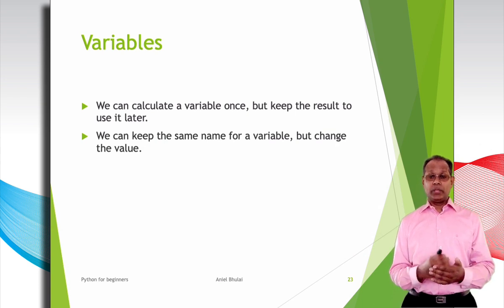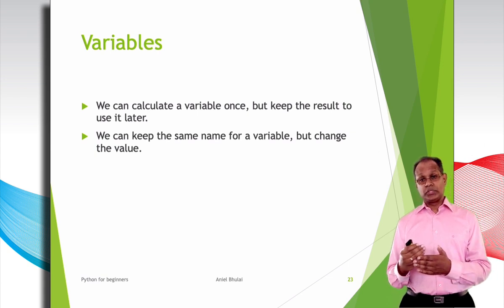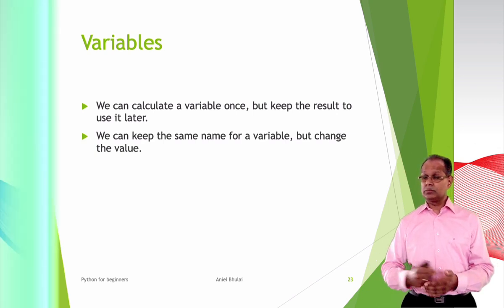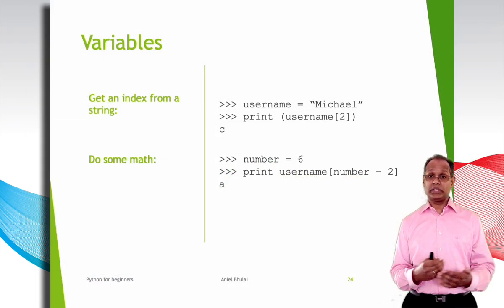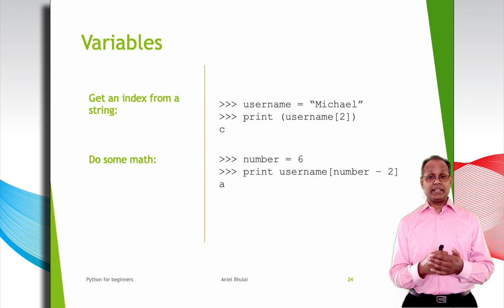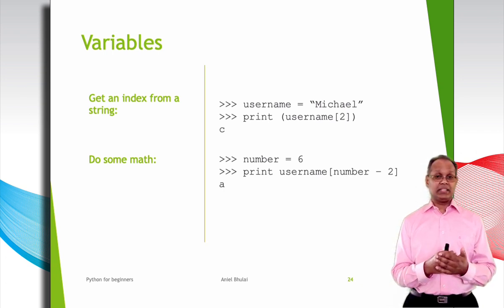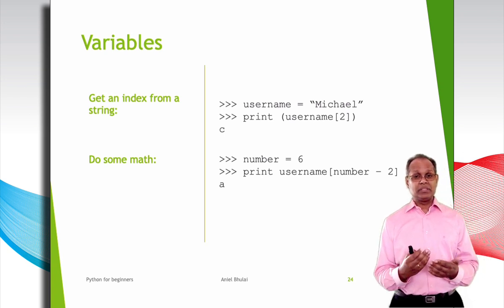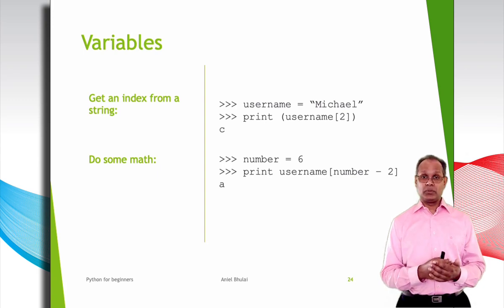From the previous examples, we can say that we can calculate a variable once but keep the result to use it later, and we can keep the same name for a variable but change the value. Here are some other things we can do with strings. We can get, for example, a value that belongs to an index number from a string. In this example, we have a variable with the value 'Michael'. By using the statement print username[2], we can get the value that belongs to index number 2, which is 'c'. Remember that index numbers start from 0 instead of 1.